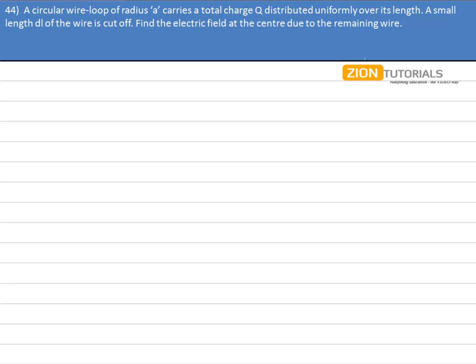A circular wire loop of radius A carries a total charge plus Q distributed uniformly over its length. What happens is, initially we have a ring that carries a charge plus Q and radius is plus A.